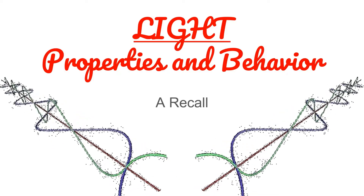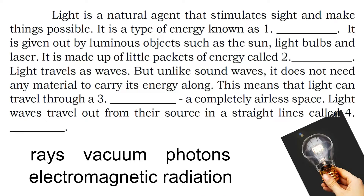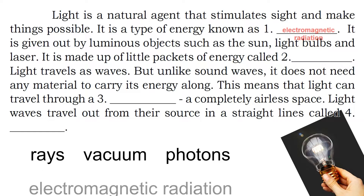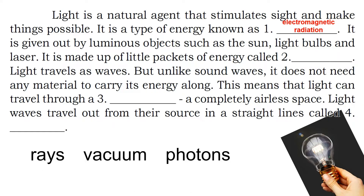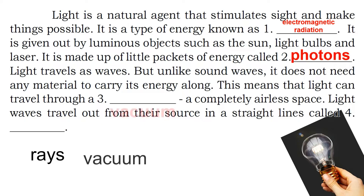Let us first recall the different properties and behavior of visible light. Light is a natural agent that stimulates sight and makes things possible. It is a type of energy known as electromagnetic radiation, given out by luminous objects such as the sun, light bulbs, and laser. It is made up of little pockets of energy called photons. Light travels as waves, but unlike sound waves, it does not need any material to carry its energy along. This means that light can travel through a vacuum — a completely airless space.